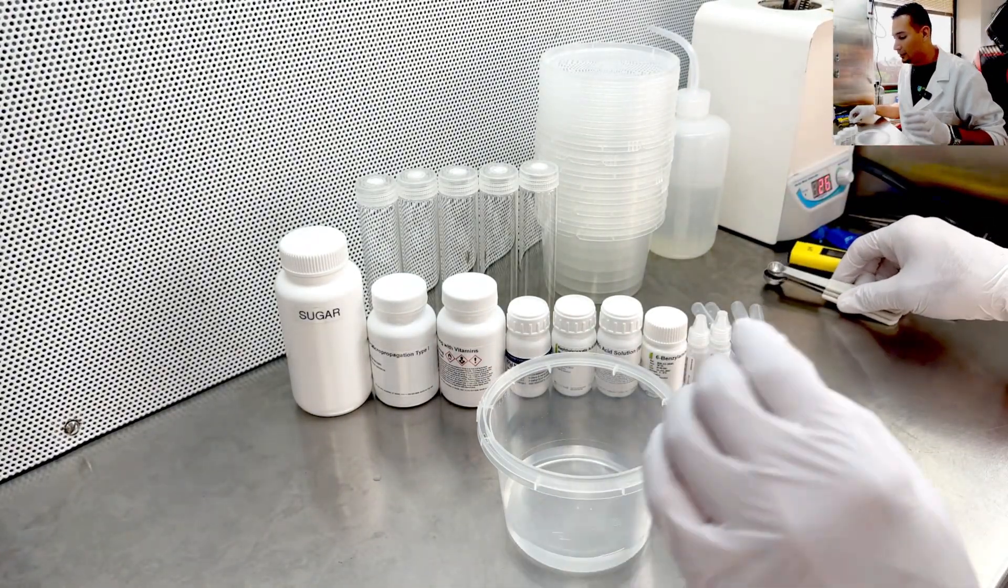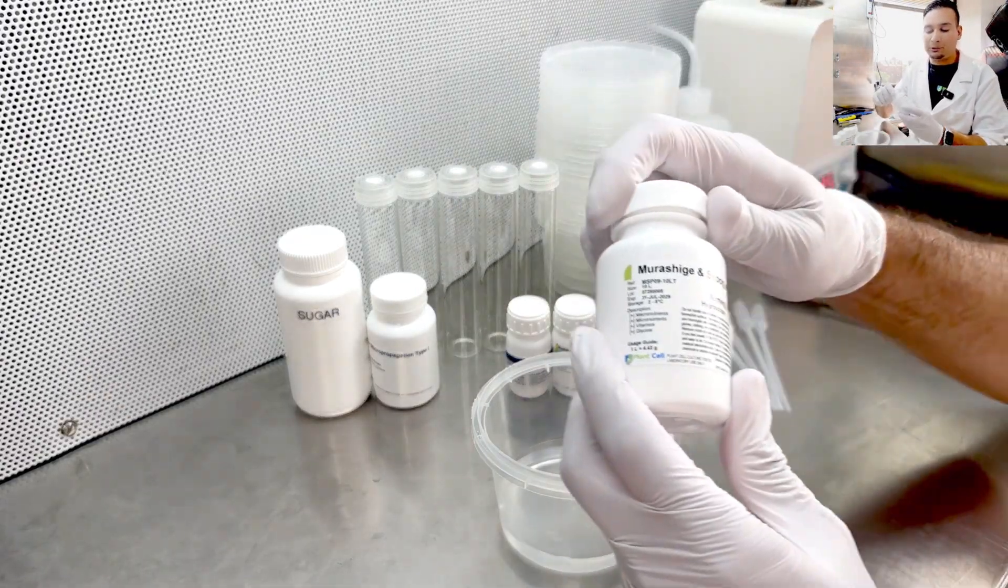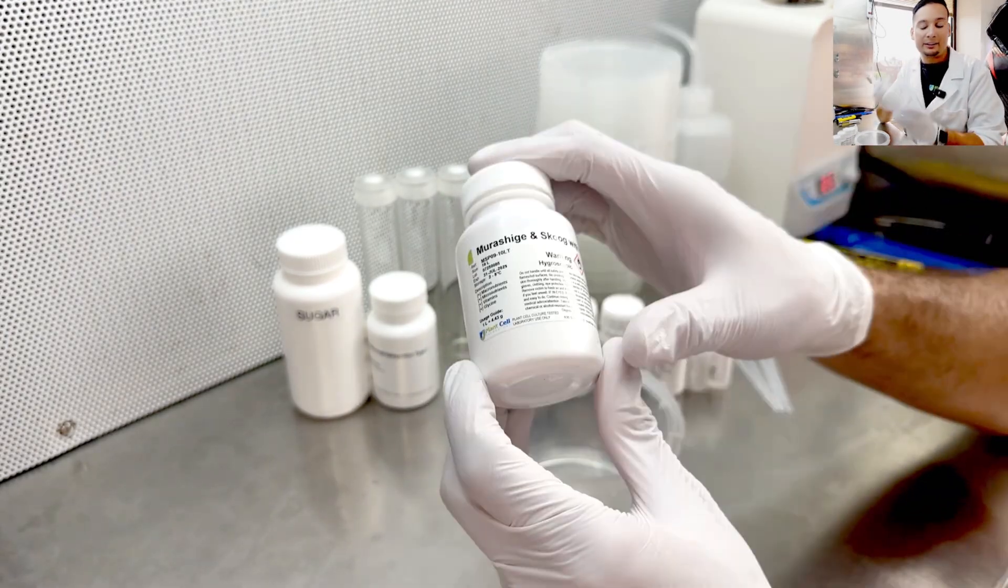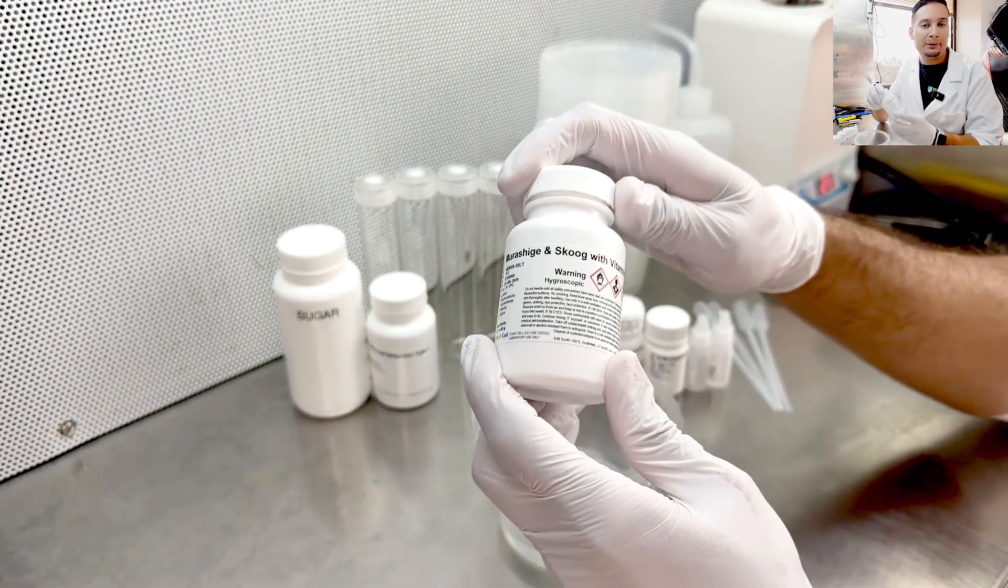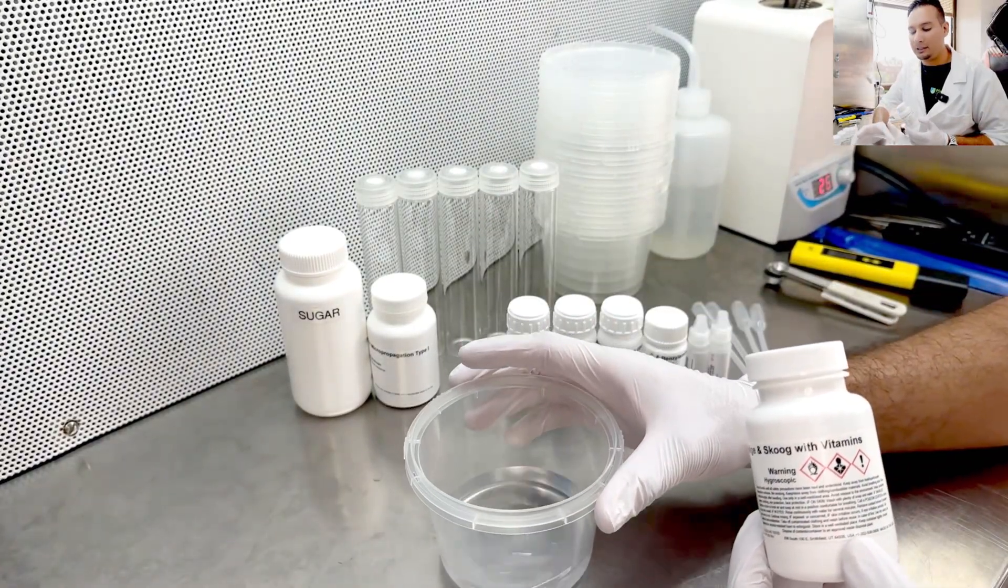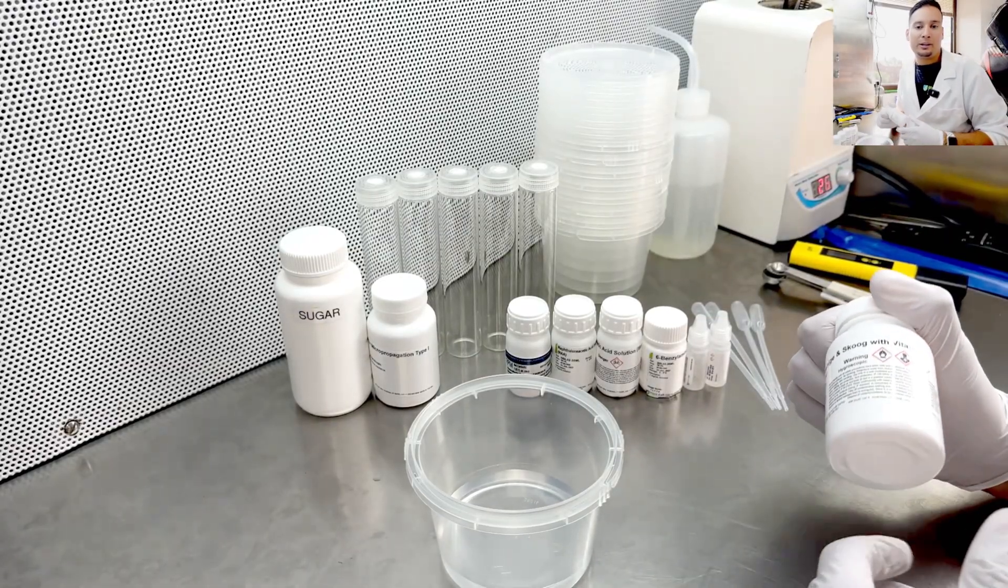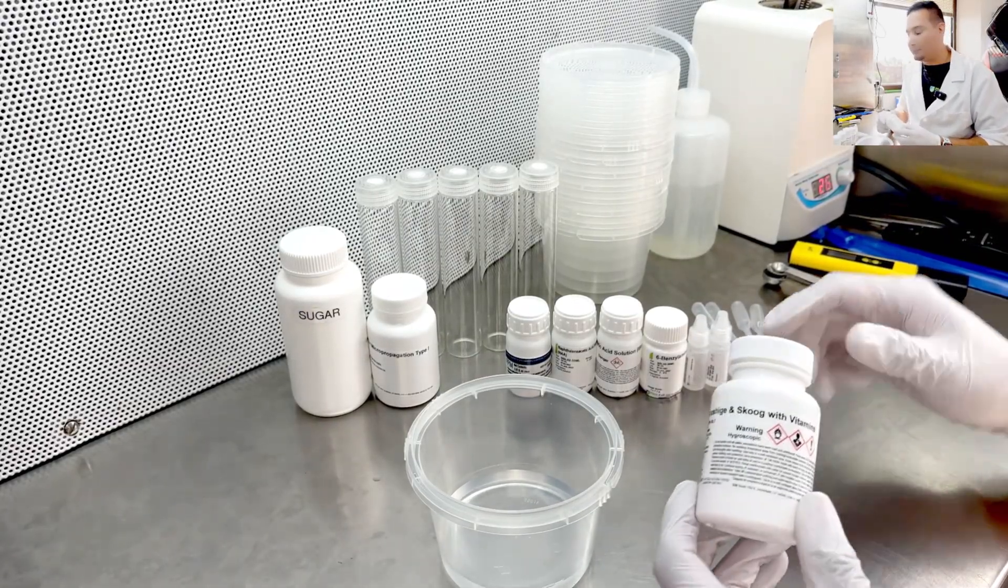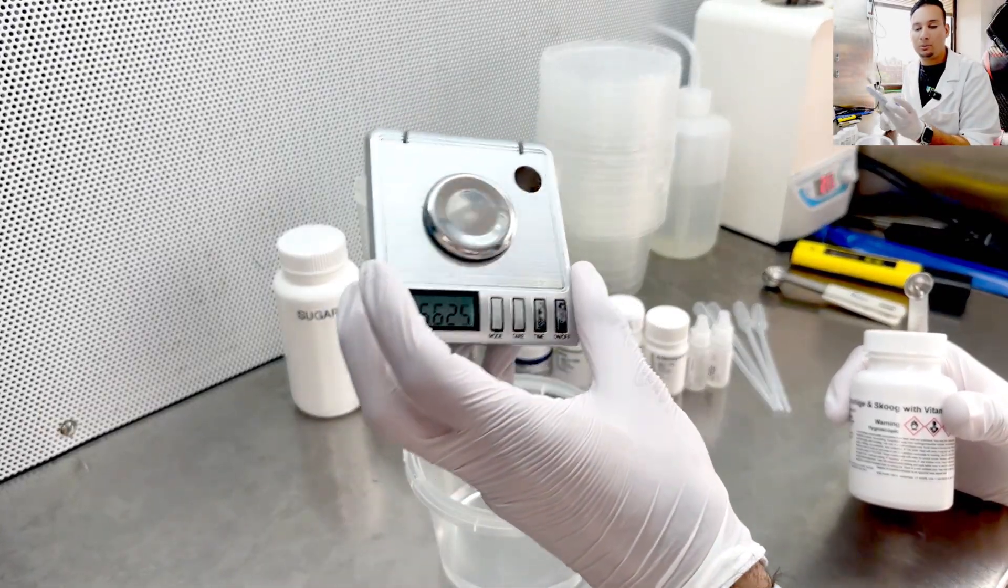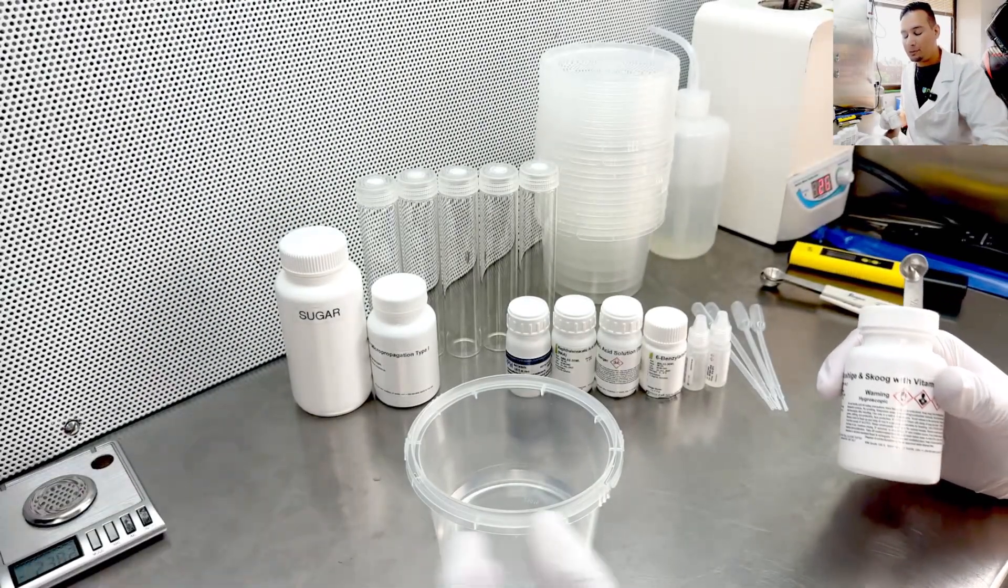Let's get started with the MS media. For the MS media, we need 4.43 grams per liter. However, because we are making approximately 100 milliliters of media, we only need 0.43 grams. You can use a measuring scale to measure these more precisely.